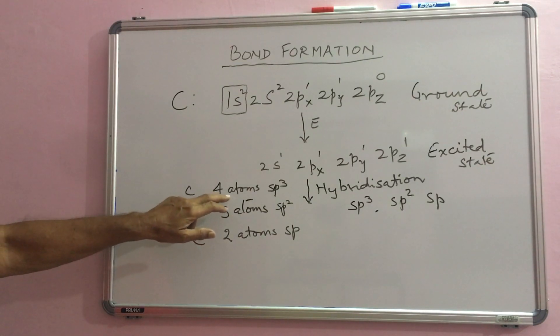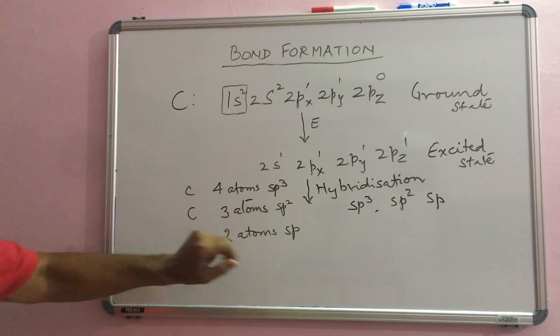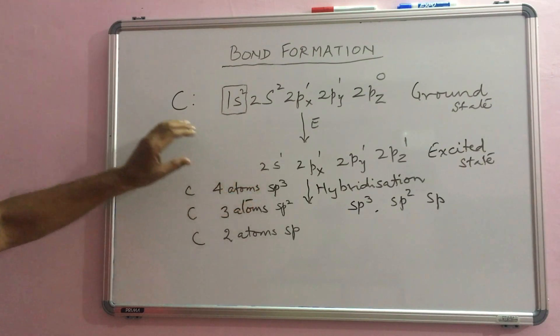Such cases are methane, tetrachloromethane, ethylene or acetylene. So, we will first see now, what is SP3 hybridization.